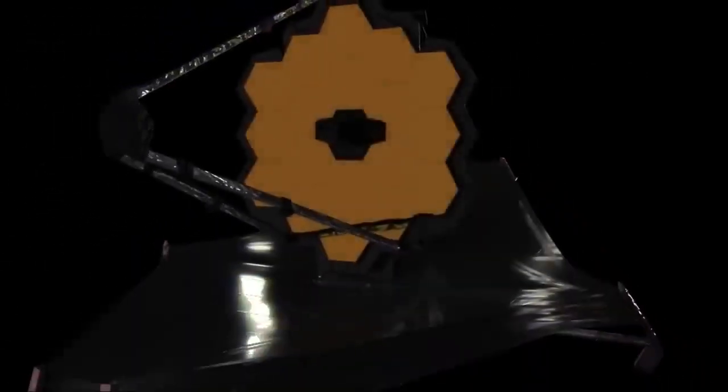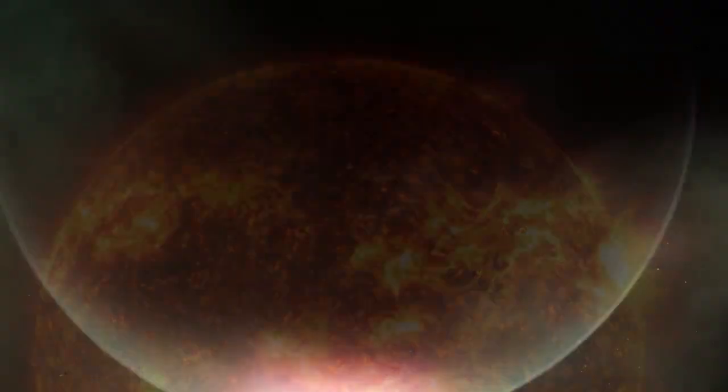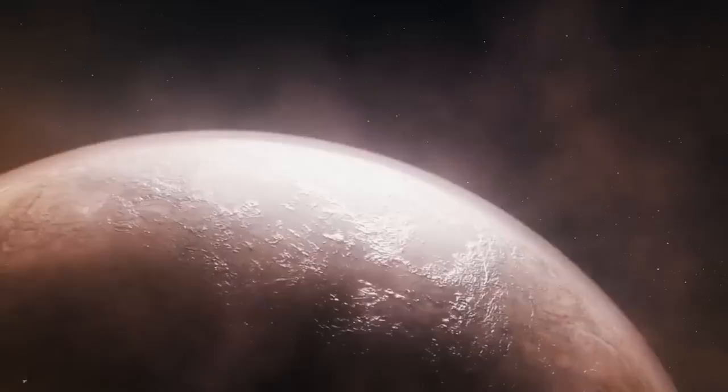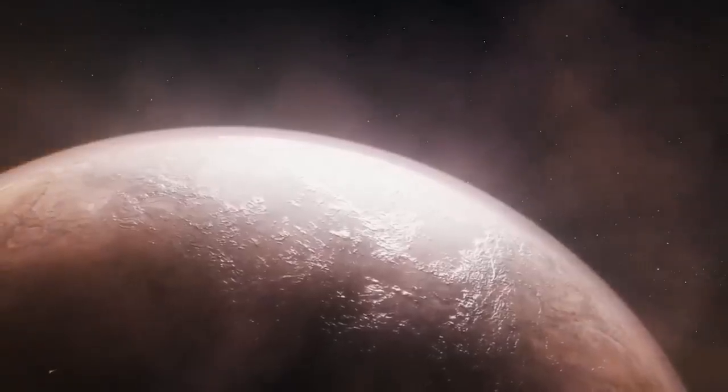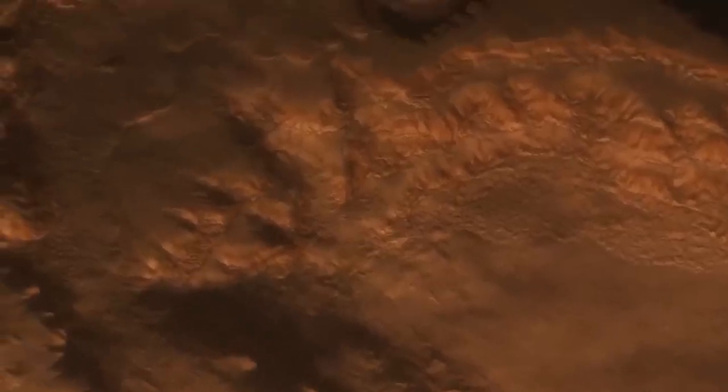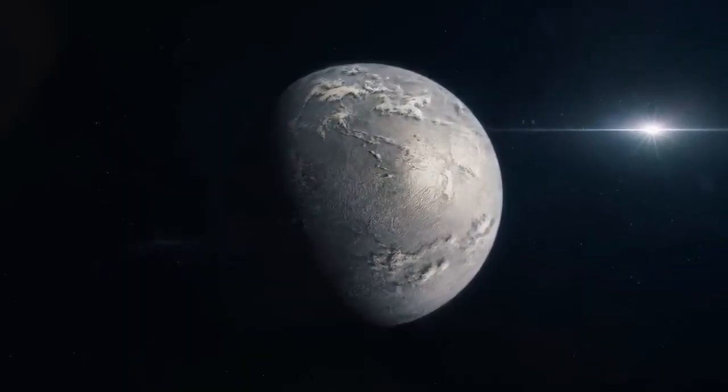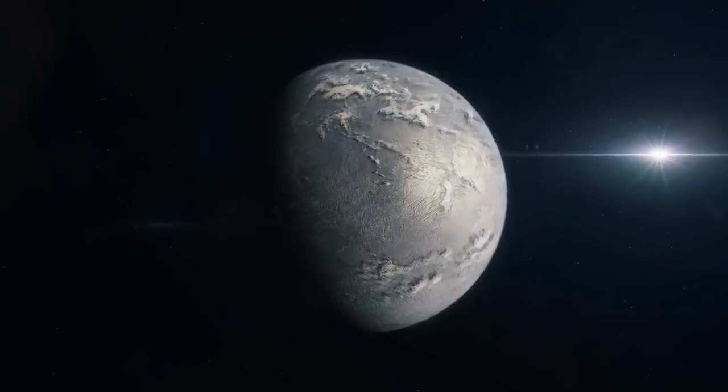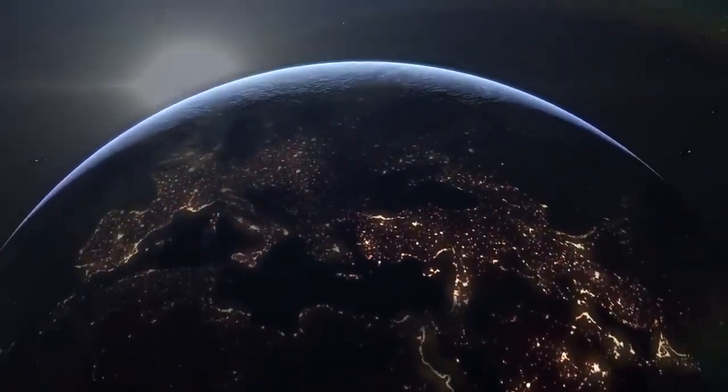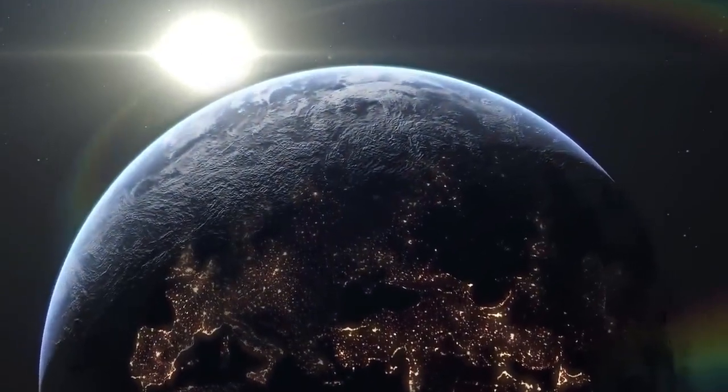However, the likelihood of the planet's orbit being in the right alignment for scientists to observe a transit is only 1.5%. Additionally, the star's tendency to flare also adds complexity to the situation. According to astronomer David Kipping of Columbia University, the star is tricky because its heat causes a rocky planet to absorb sunlight and re-emit it as infrared light. However, rocky planets produce a distinct type of infrared radiation from stars like Proxima Centauri.